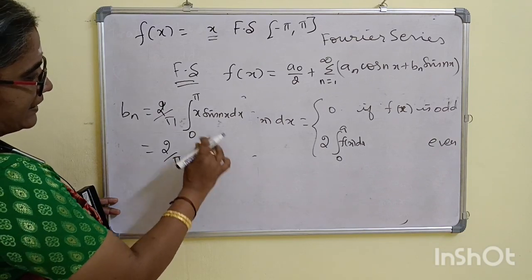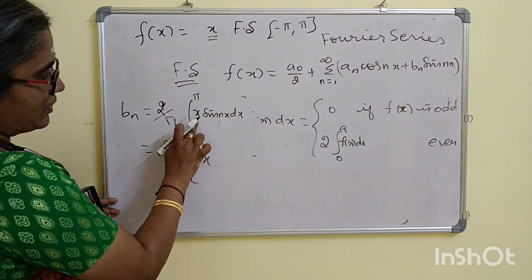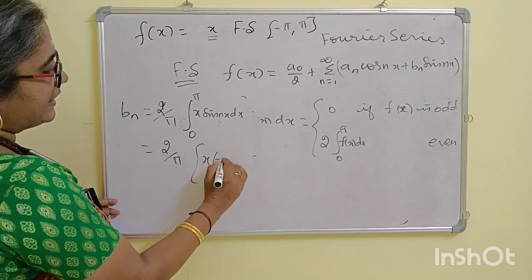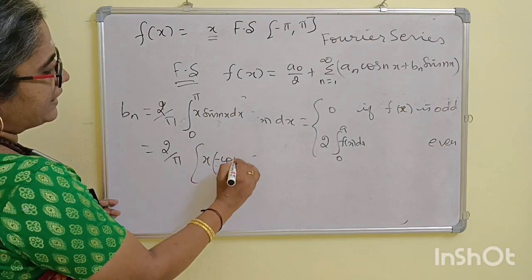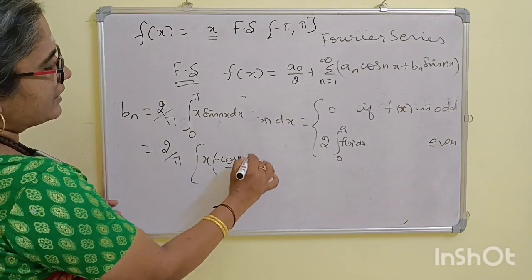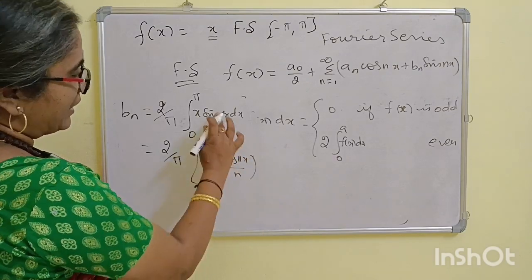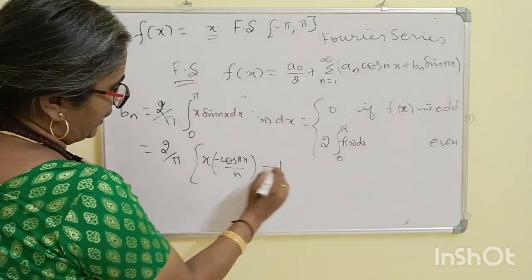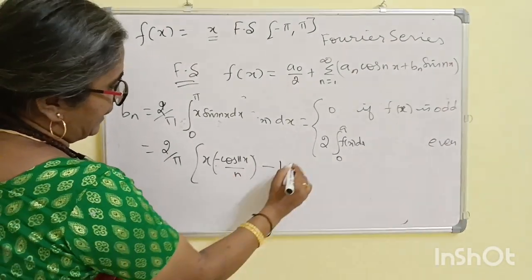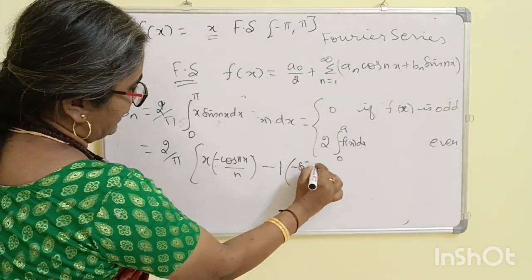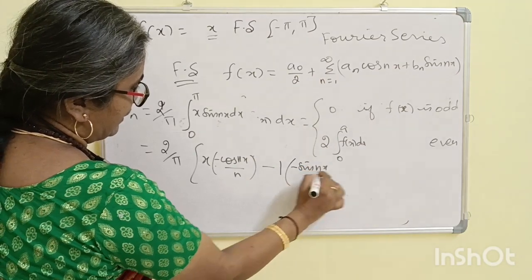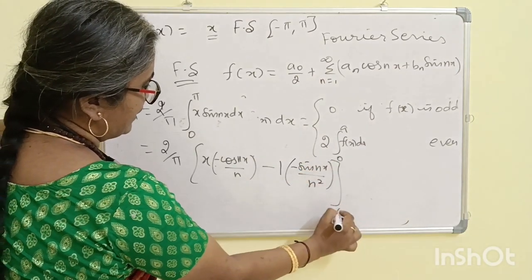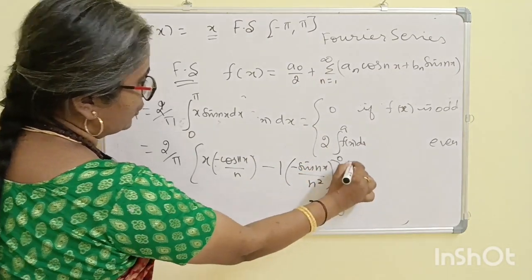Integrate: x times sin(nx). The integration of sin(nx) is -cos(nx)/n. Differentiate 1, integrate 1: gives -sin(nx)/n². The limit is 0 to 5.